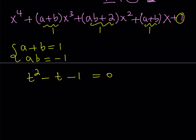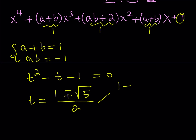From here we get the solutions using the quadratic formula: negative b plus or minus the square root of b squared minus 4ac. In this case that gives us the square root of five, divided by two. So we get two solutions: t equals one plus root five over two, and t equals one minus root five over two.